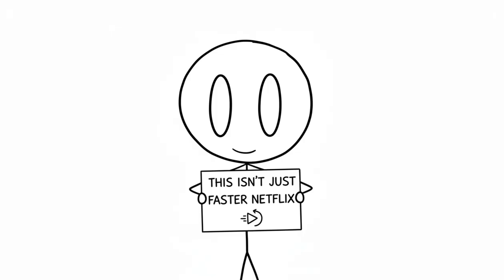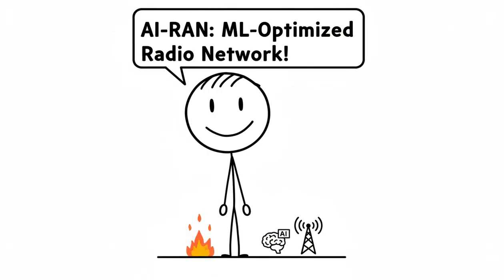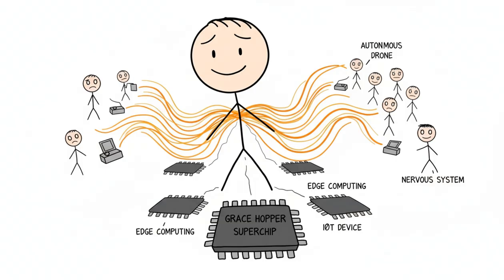This isn't just faster Netflix. We're talking about AI-RAN, a radio access network that uses machine learning to optimize itself in real time. It's the nervous system for a world of autonomous drones, IoT devices, and edge computing powered by their Grace Hopper superchips.